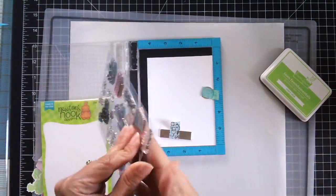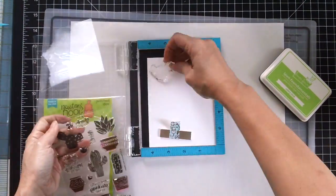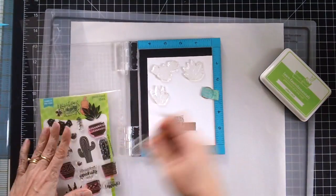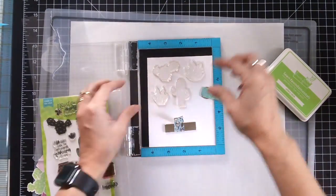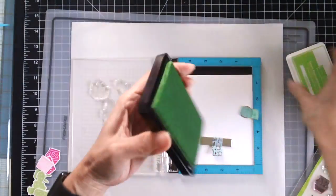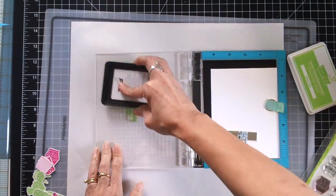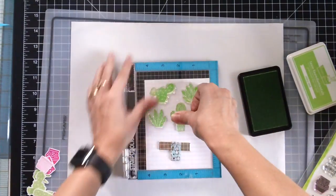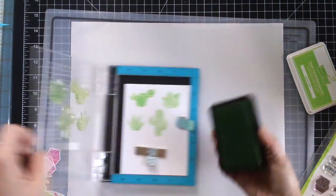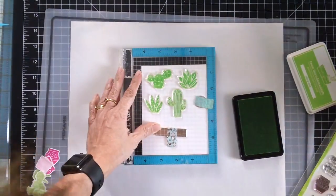So I started out by stamping my images on Neenah solar white cardstock. This is the 110 pound cardstock and I will be speeding this video up since I am making two cards for you today. I wouldn't want this video to go too long but I stamped the images here and to get a good impression I use my stamping tool and I stamped those three times.